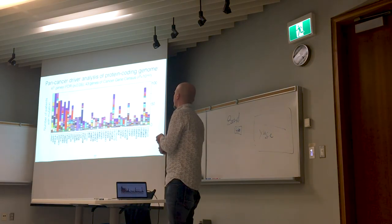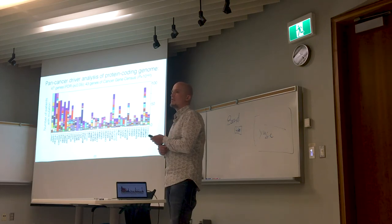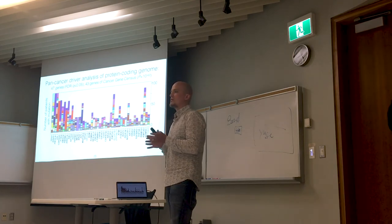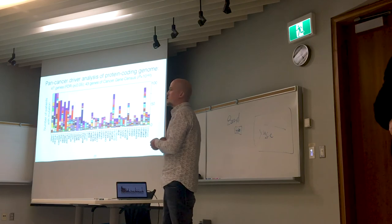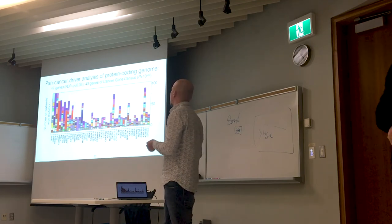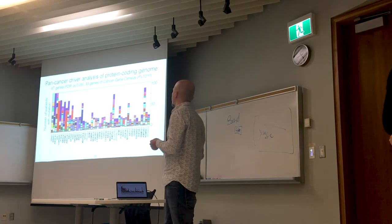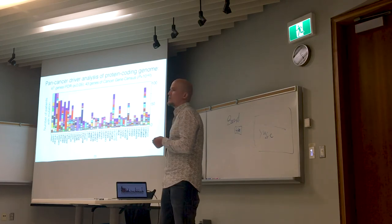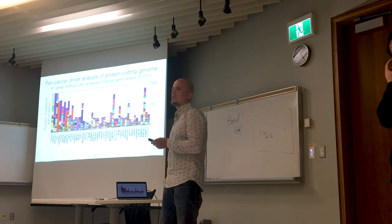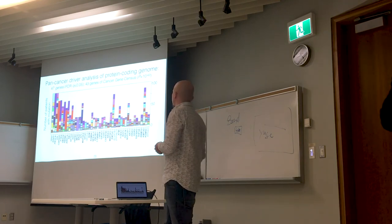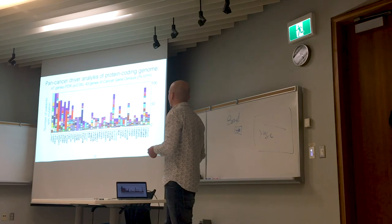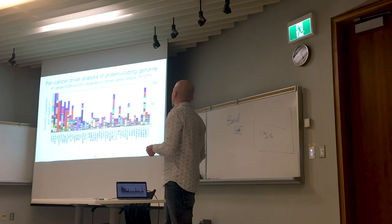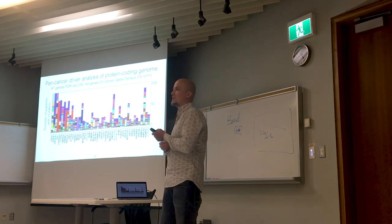Before going into the non-coding analysis, we wanted to make sure our driver discovery tool is working correctly. So we first looked in the protein-coding sequence — where you know where to look. With our method identifying 47 genes, 90% of them are well-affirmed cancer census genes, which lends confidence to our driver discovery tool. There are some false positives, including olfactory receptors, but most of those genes are confirmed cancer driver genes from earlier studies.